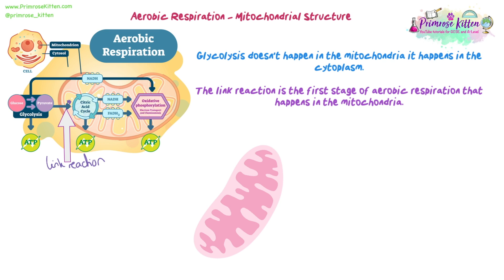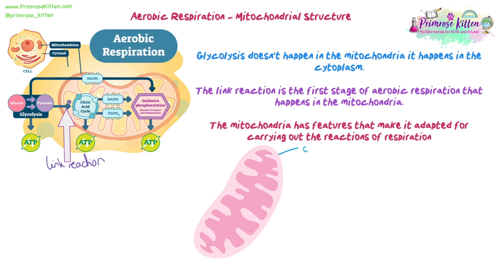Let's have a quick look at mitochondria structure and how it's adapted to carry out its functions. First, we have the outer membrane, which controls the entry and exit of substances. There's an outer and an inner membrane because mitochondria are double-membraned organelles, same as the nucleus and chloroplasts. We think that mitochondria, like chloroplasts, were potentially once free-living prokaryotic organisms that got absorbed into a cell, giving us eukaryotic cells.